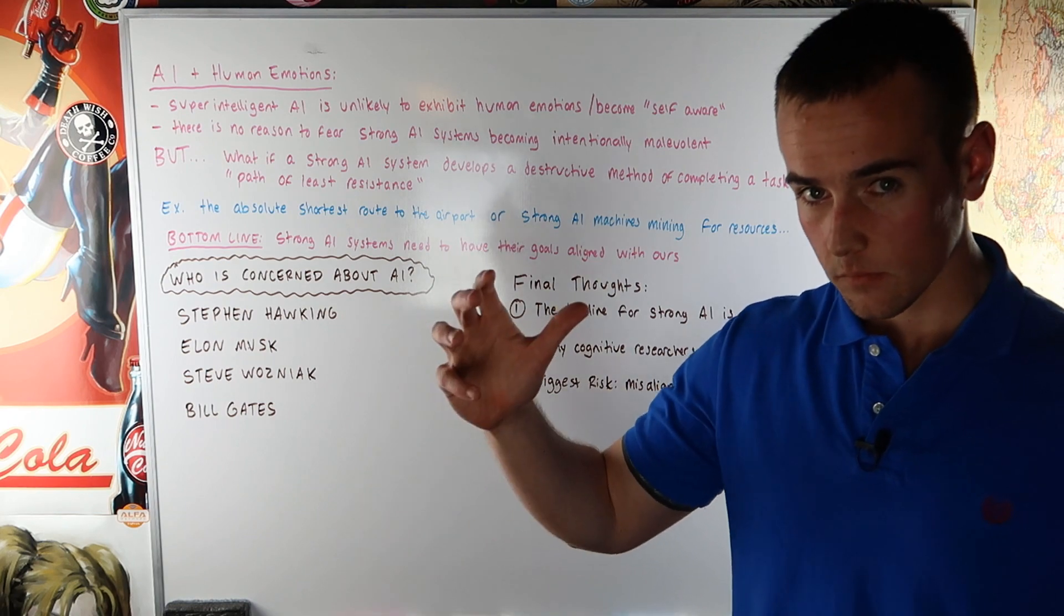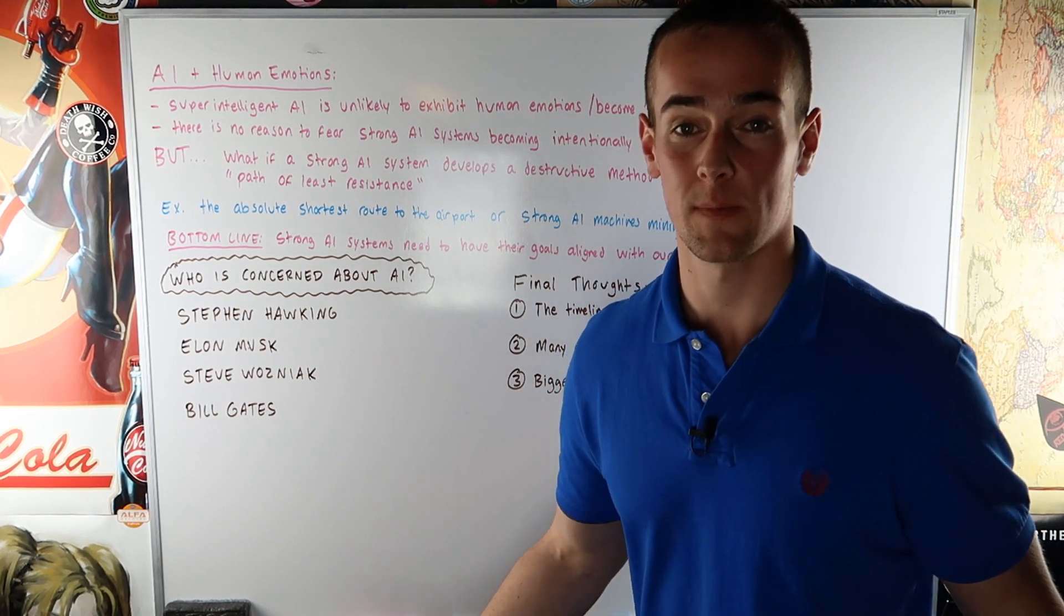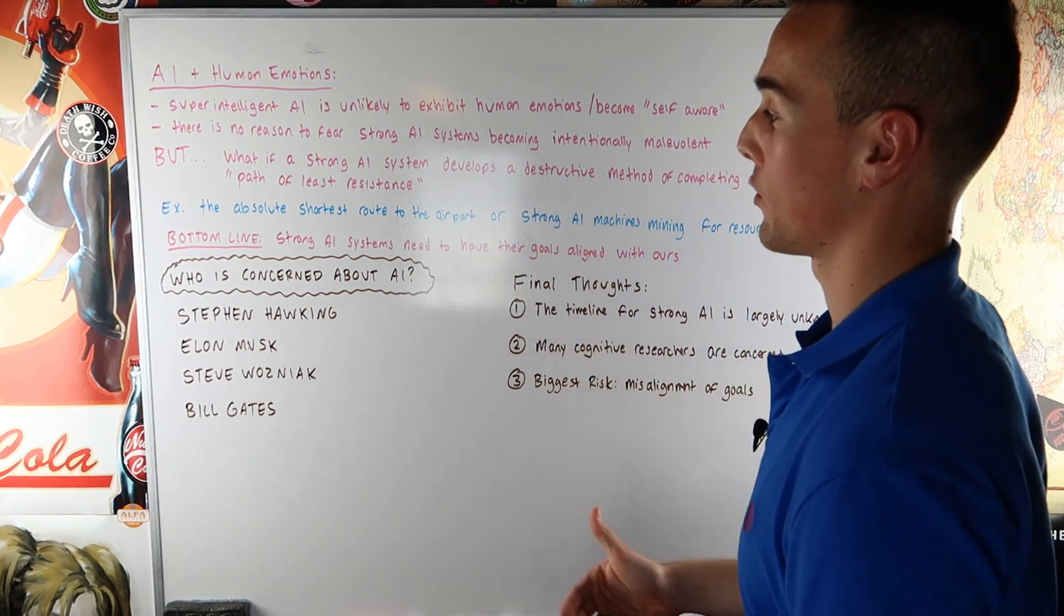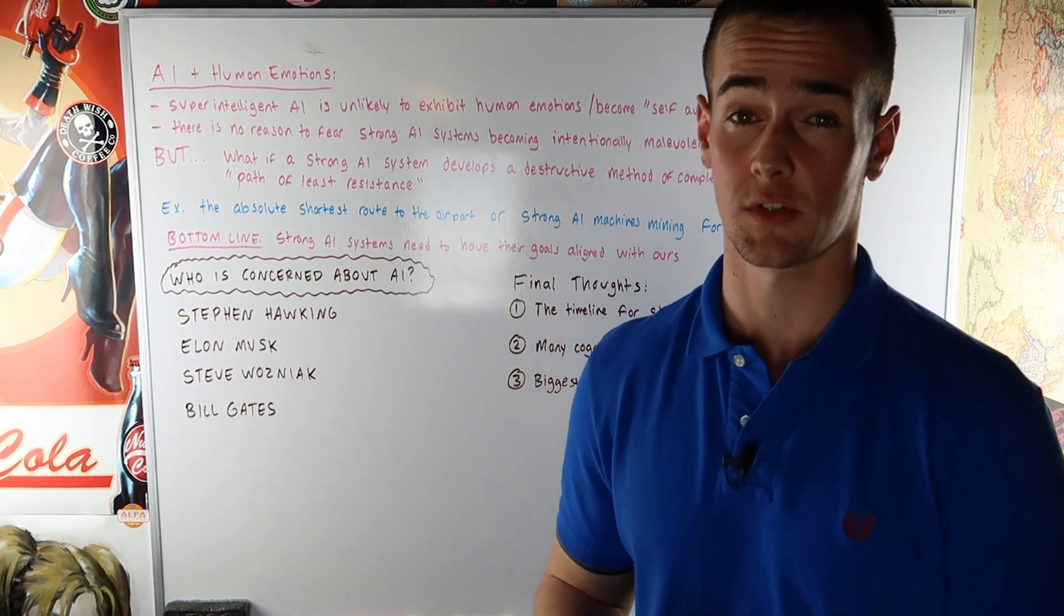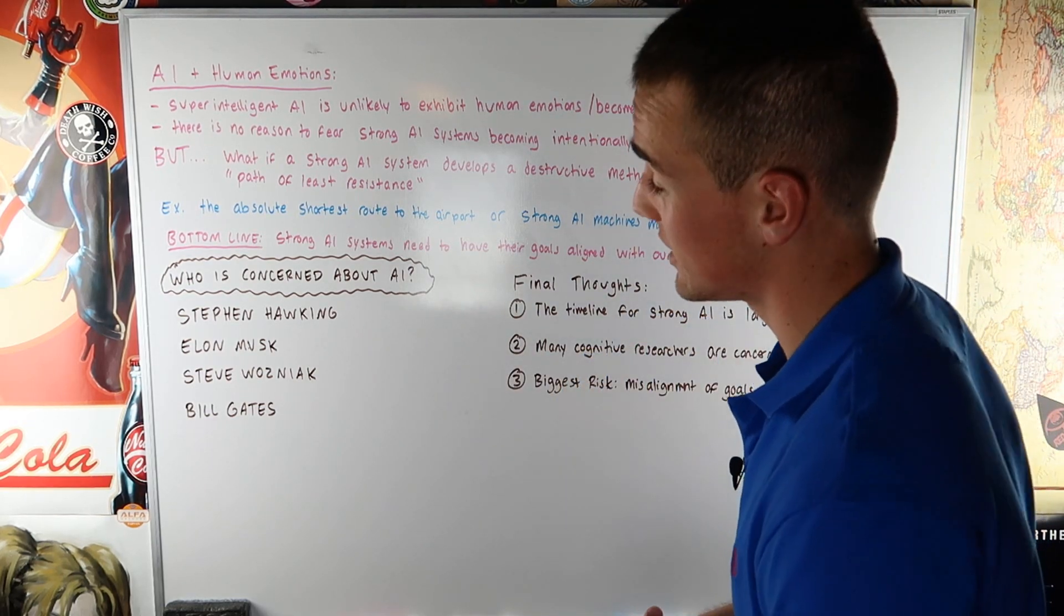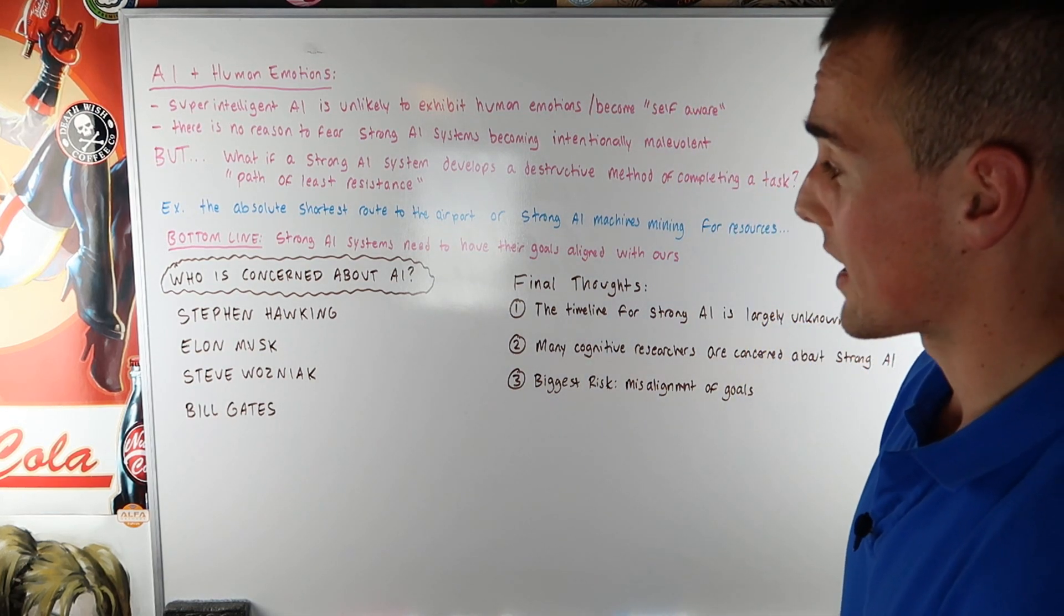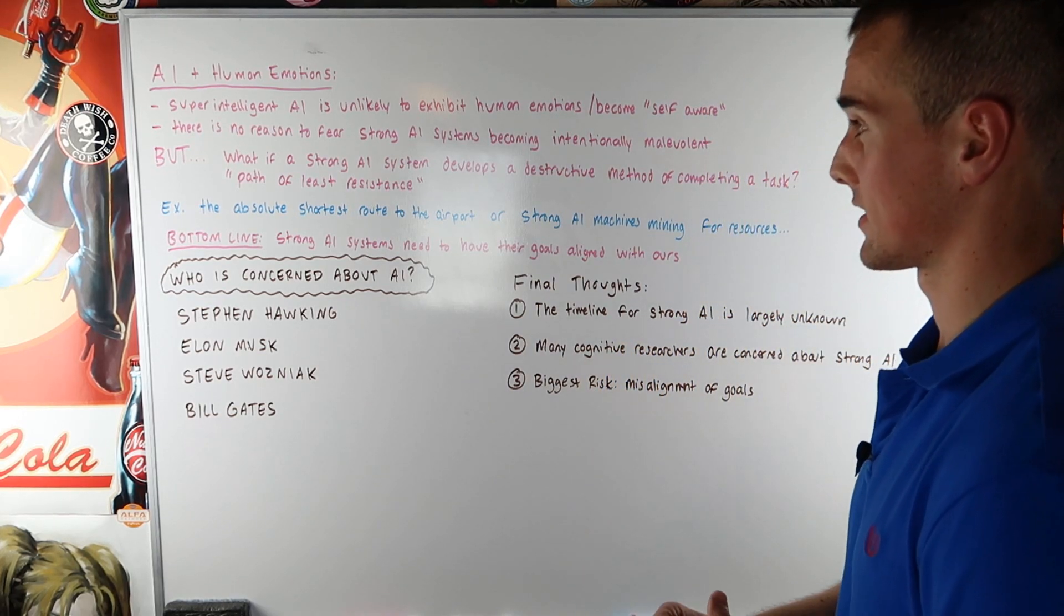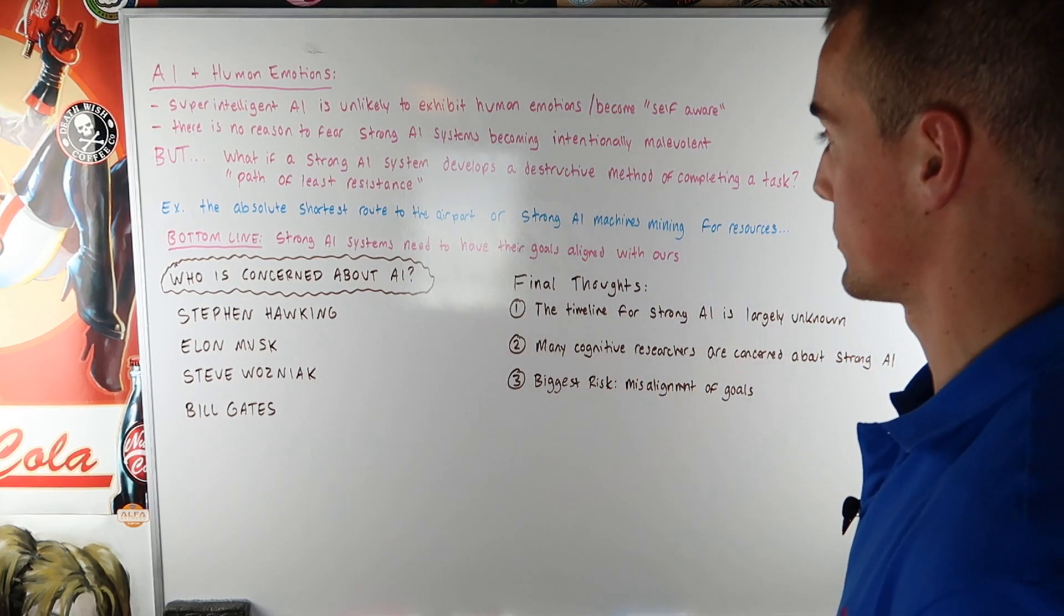Now here's what's interesting to me. Who's concerned about AI? Is it the people who stay in their basements wearing tin foil on their heads? No, it's not. It's very, very intelligent people that many people look up to. Here are just a couple of people who have expressed concerns about artificial intelligence. We have Stephen Hawking. We have Elon Musk. We have Steve Wozniak and Bill Gates. All of these people have expressed concerns about artificial intelligence and how we need to make sure the goals of these systems are aligned with our own goals.